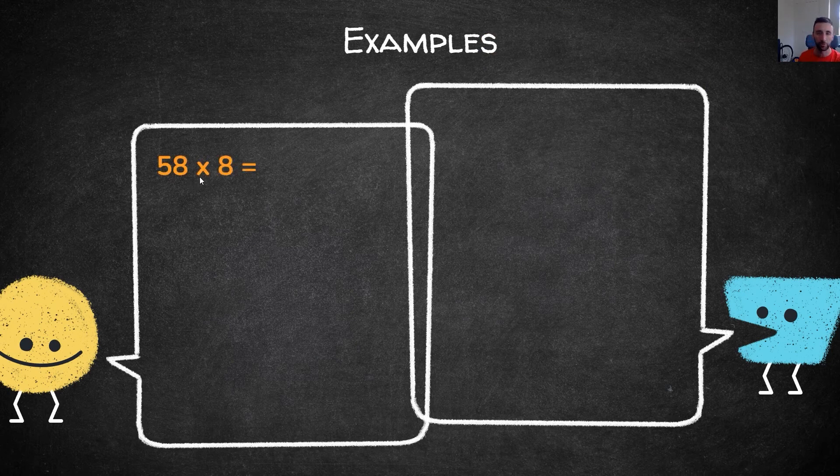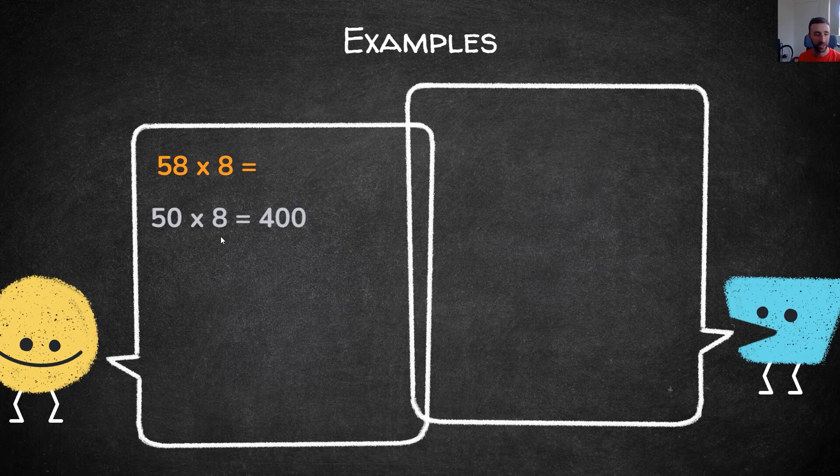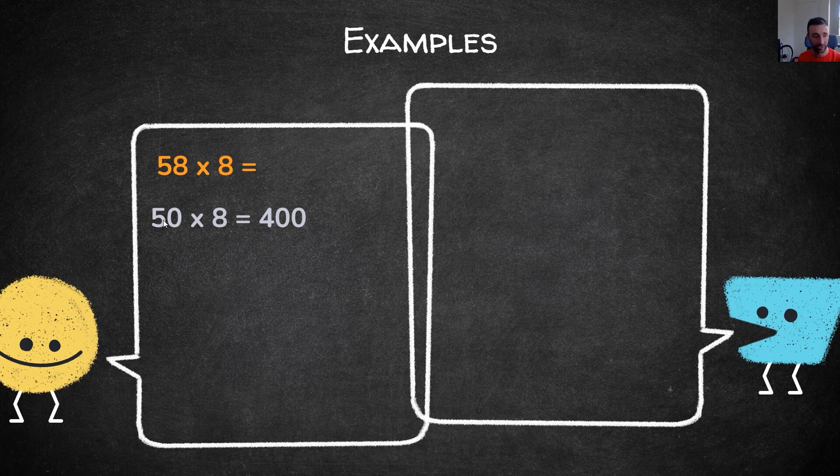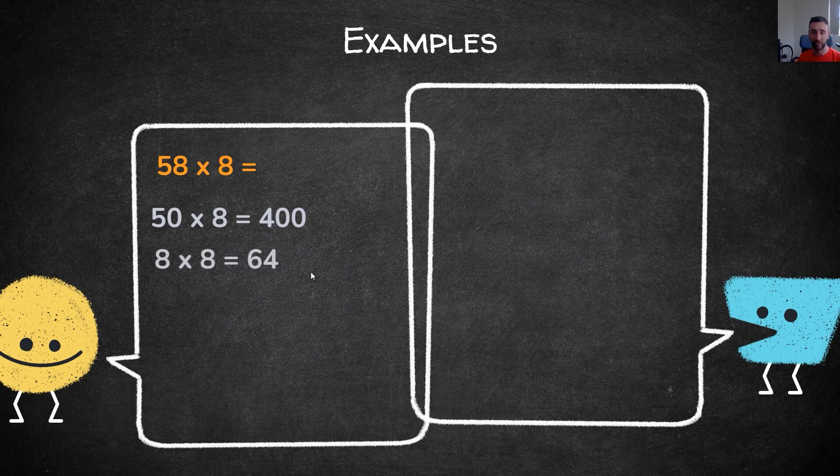The first one is 58 multiplied by 8. I can partition 58 into tens and ones, so 50 multiplied by 8 gives us 400. If you need a quick way to multiply, look at my multiplying by tens video. Basically, multiply 5 by 8 which gives 40, then add the 0 back to make 400. Then we have 8 times 8 which is 64.